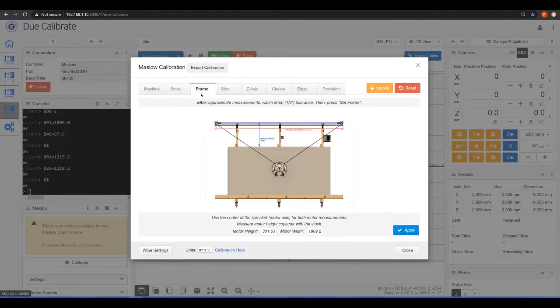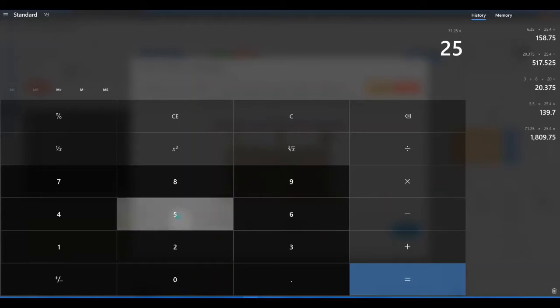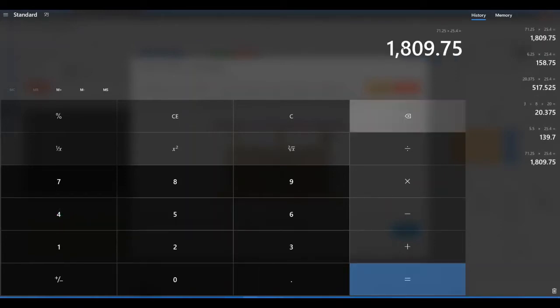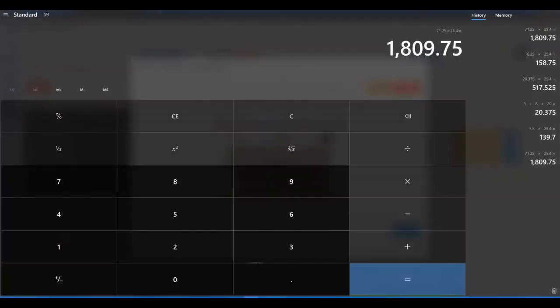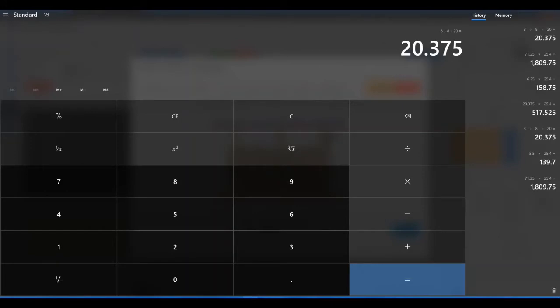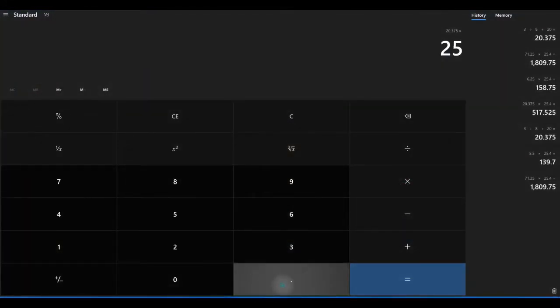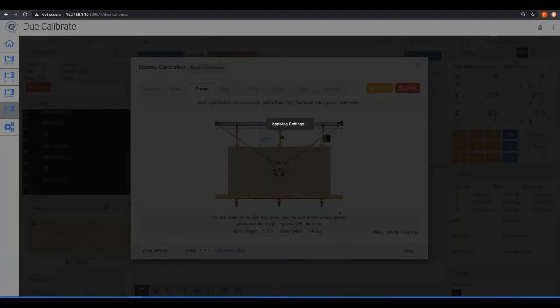Then we go to the frame and the motor height, 71.25 times 25.4 equals 1809.75. That's the width between the motors. And then the motor height is 20 and three eighths. So three divided by eight plus 20 is 20.375 times 25.4 equals 517.52. So 517.52. We apply.